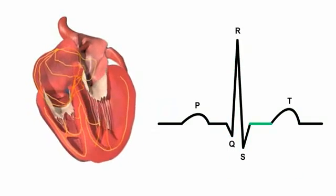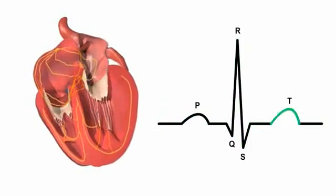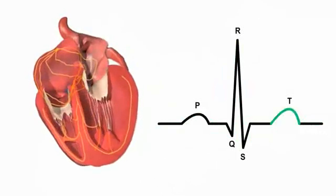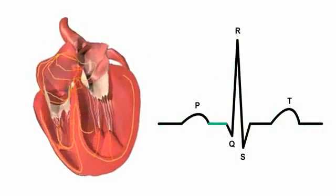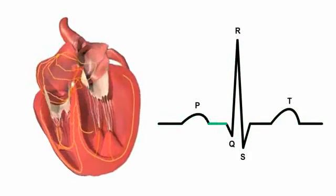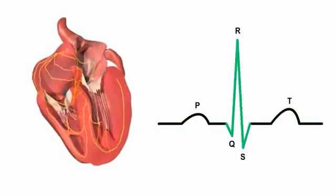The sequence of events just described and the associated ECG trace repeats with every heartbeat. Remember, an ECG is not a tracing of a single action potential, but an amalgamation of the many action potentials that constitute the electrical activity of the heart.